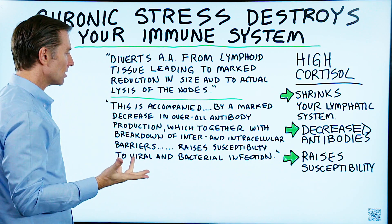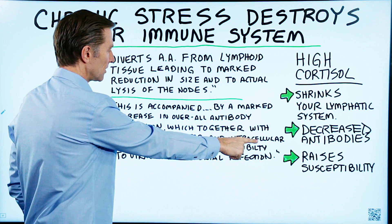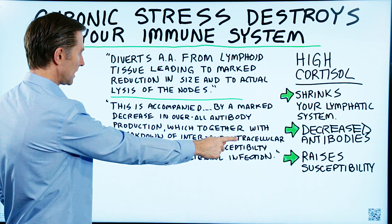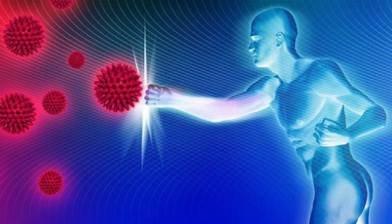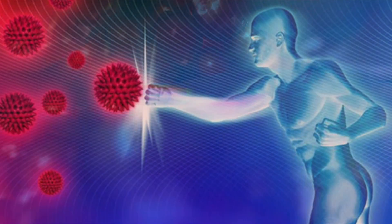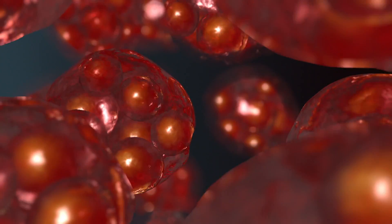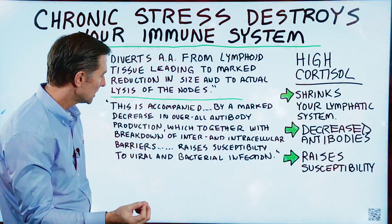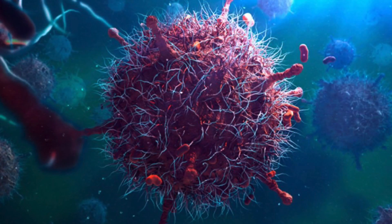This decrease in antibody production, together with a breakdown in inter- and intracellular barriers — meaning between the cells and within the cells — creates various breakdowns in your immune defense barriers. High cortisol creates a breakdown in your cellular barriers, which is going to raise your susceptibility to viral and bacterial infections.